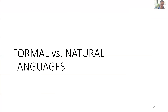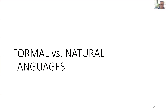First we're going to talk about formal versus natural programming languages. Natural languages are the kinds of languages that we use to communicate every day. I'm speaking in the English language, which is a natural communication language in the fields of neuropsychology, linguistics, and philosophy of language. Any language that emerged naturally in the human community was formed by a process of use, repetition, and change over time, and may be spoken or a sign language.